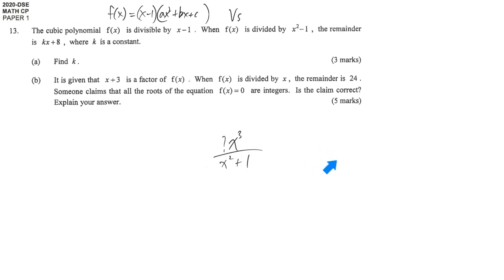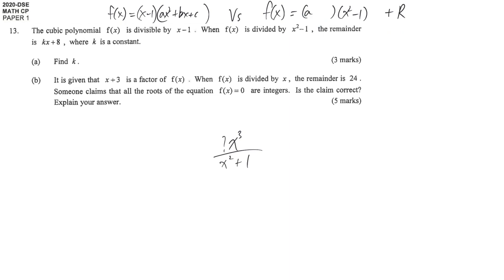The quotient should be something of degree 1 — that means a linear expression. So you can also construct f(x) as: f(x) equals the quotient times x squared minus 1, plus the remainder. The quotient should be linear, so we let it be ax plus b. Now the question is: which format will help us make good use of the information? Having 3 different unknowns makes it difficult.